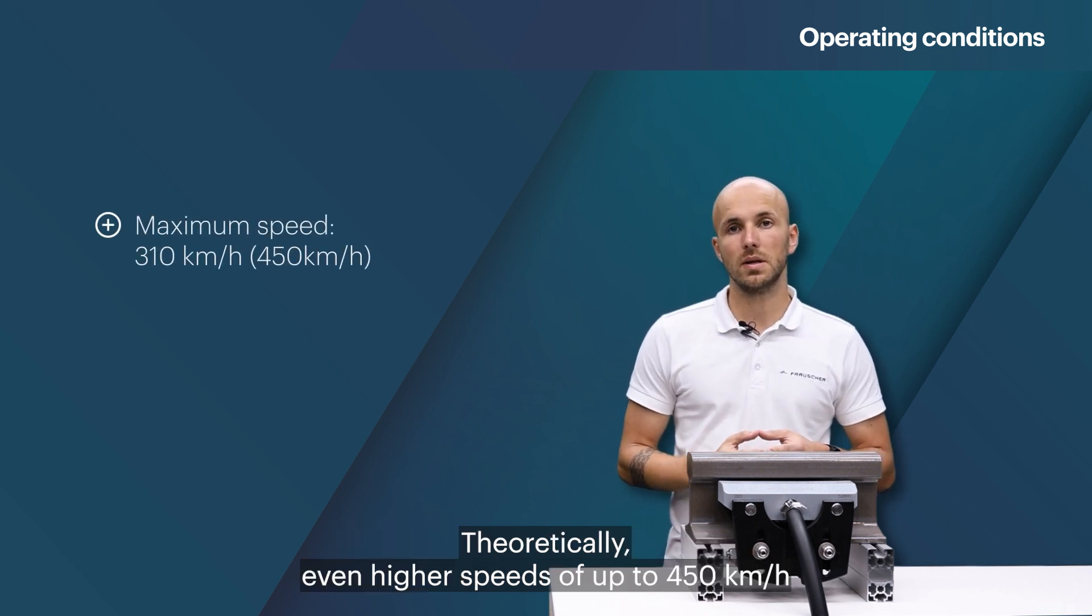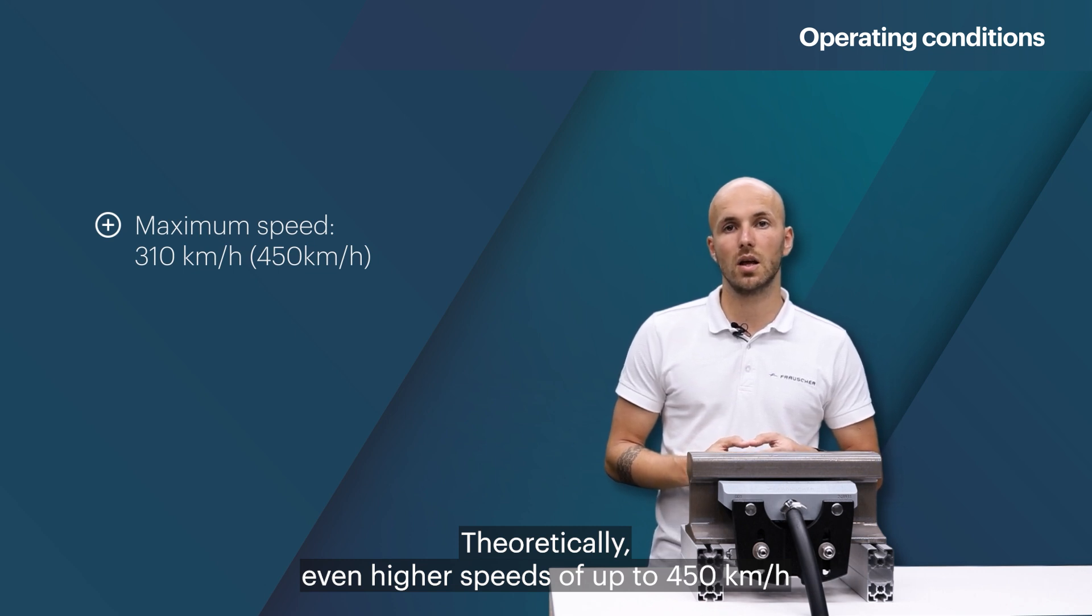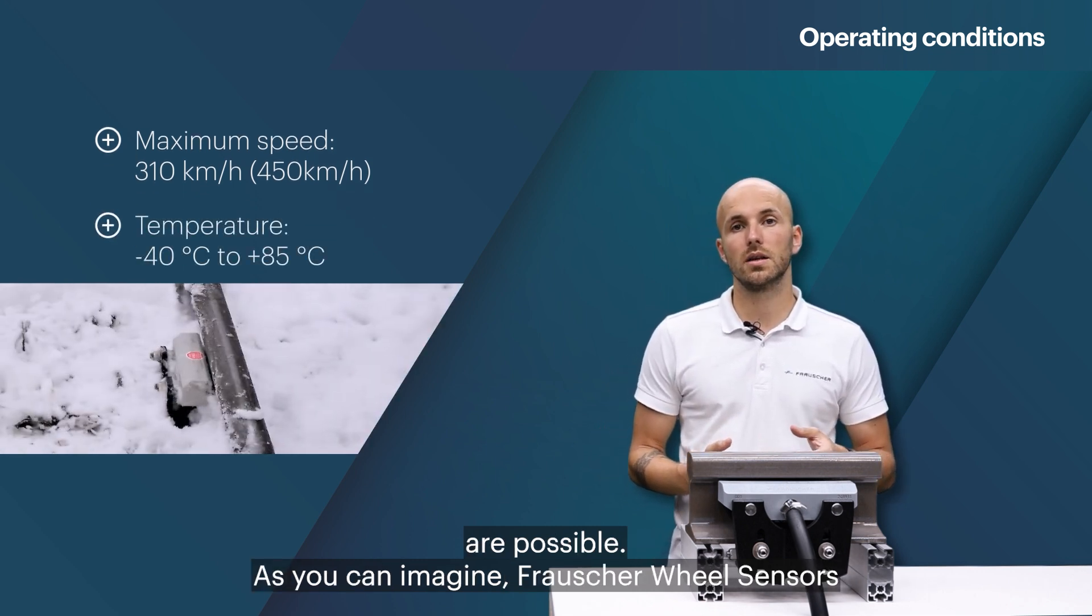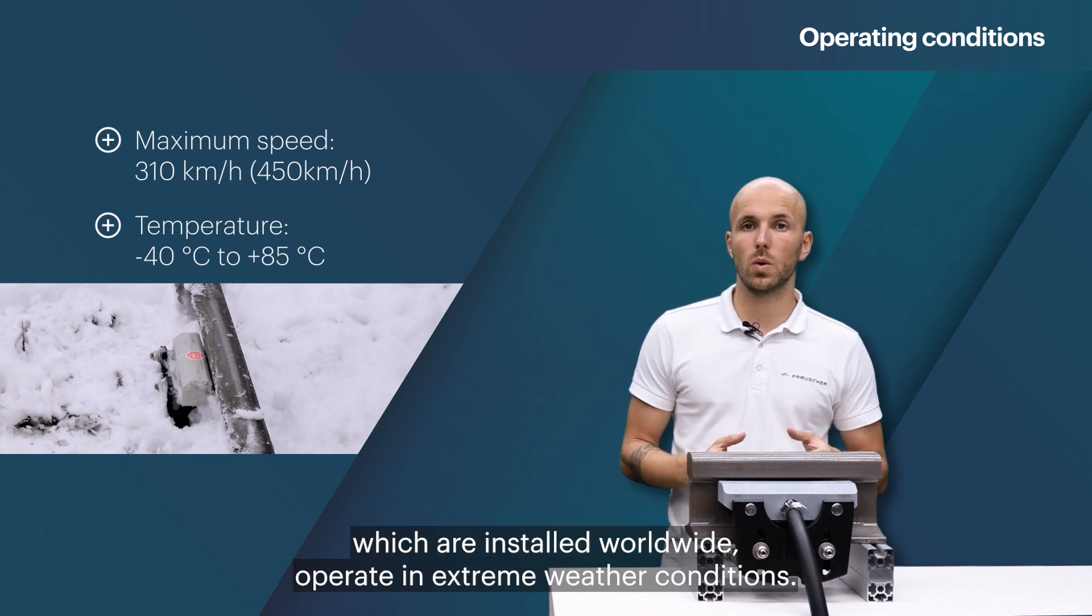Theoretically, even high speeds of up to 450 kilometers per hour are possible. As you can imagine, Frauscher wheel sensors, which are installed worldwide, operate at extreme weather conditions.